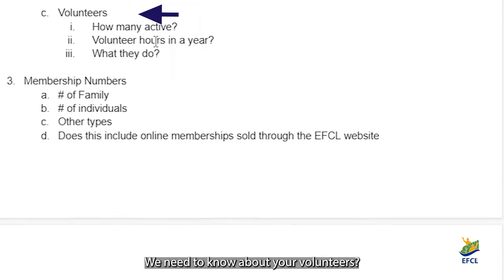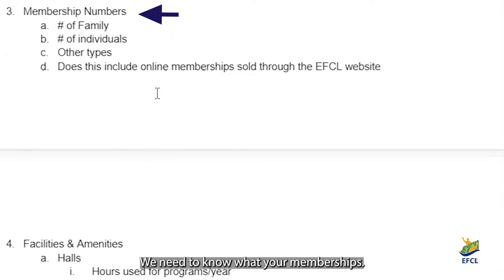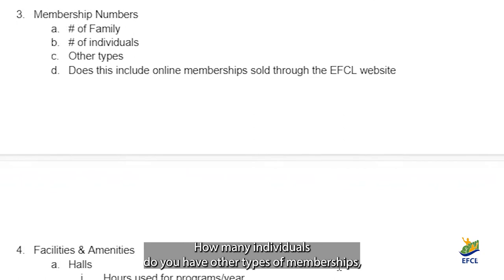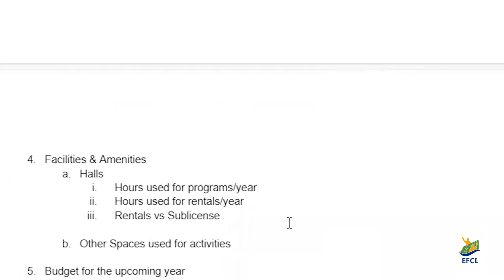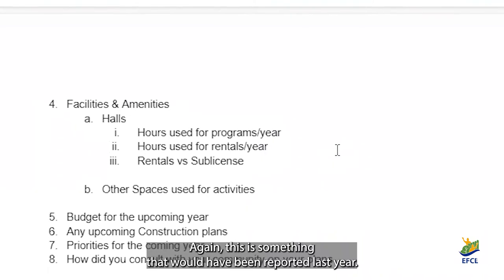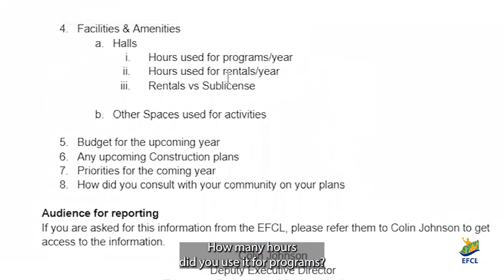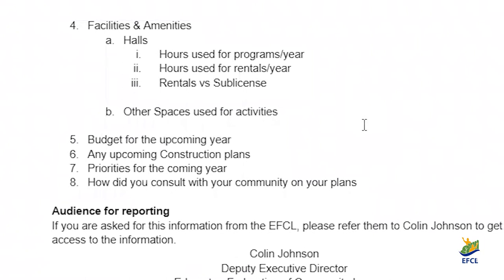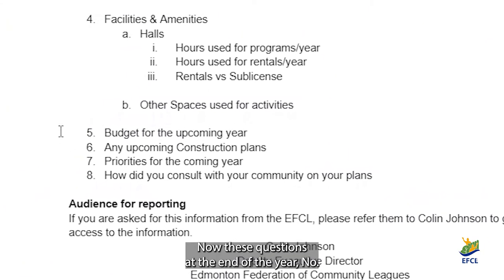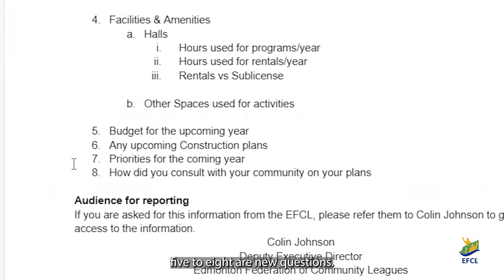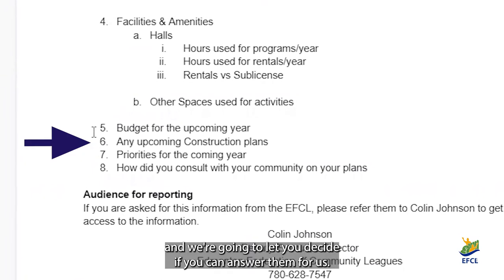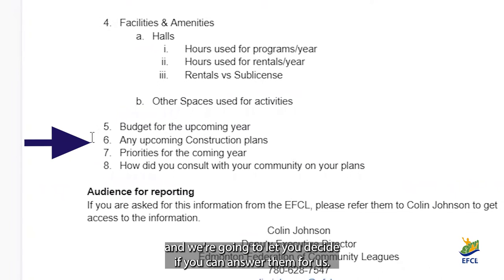We need to know about your volunteers. We need to know about your memberships — how many did you sell, how many families, how many individuals, and do you have other types of memberships? Your facilities and amenities — again, this is something that would have been reported last year. How many hours did you use it for programs? How many hours for rentals? Now the questions at the end of the checklist, numbers five to eight, are new questions. They are optional this year, and we're going to let you decide if you can answer them for us.